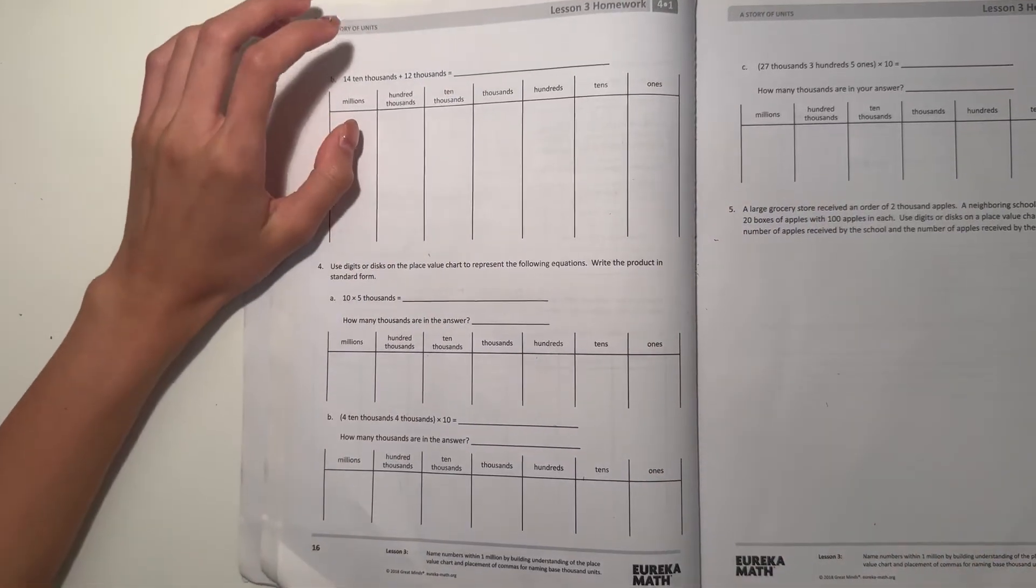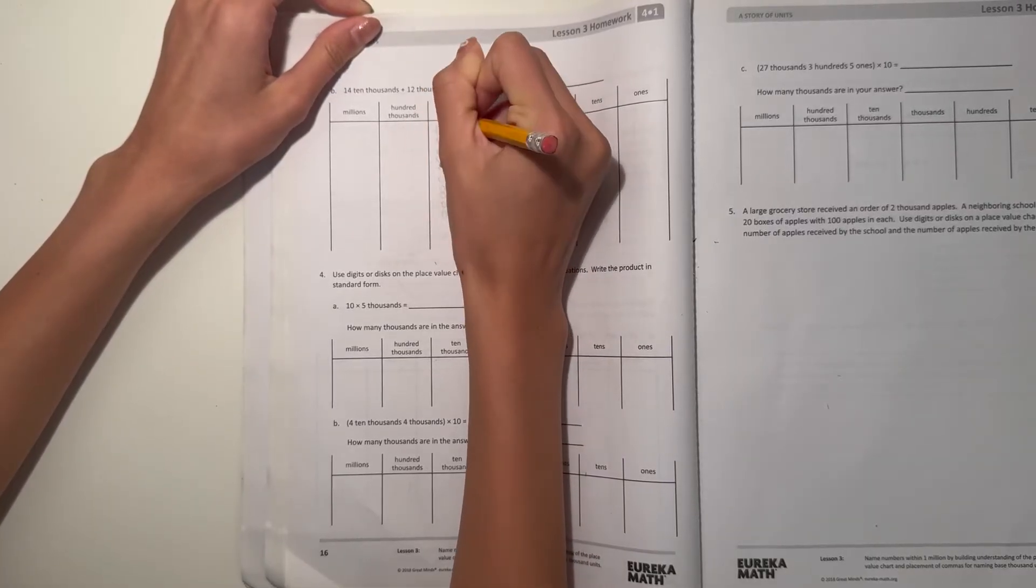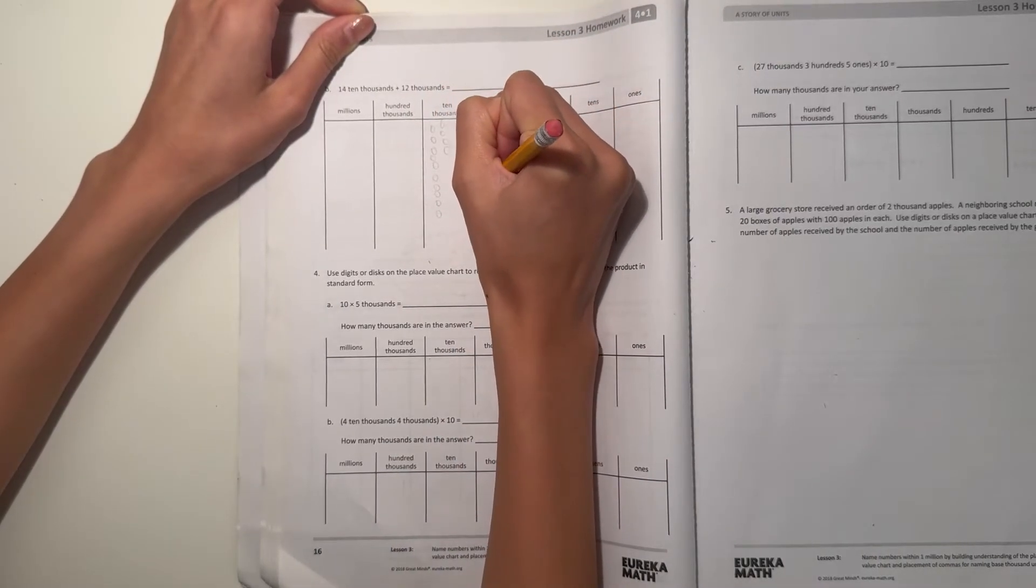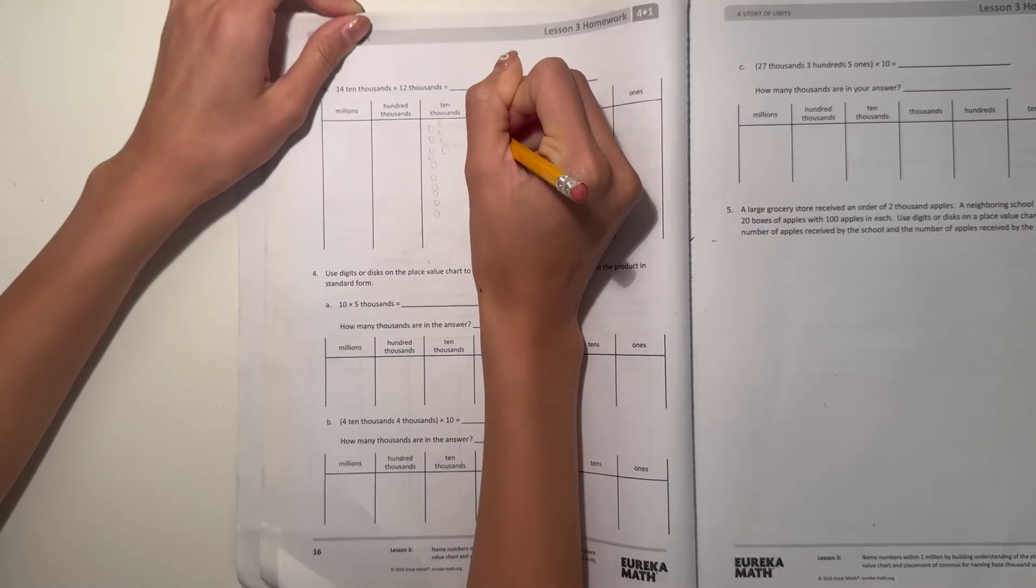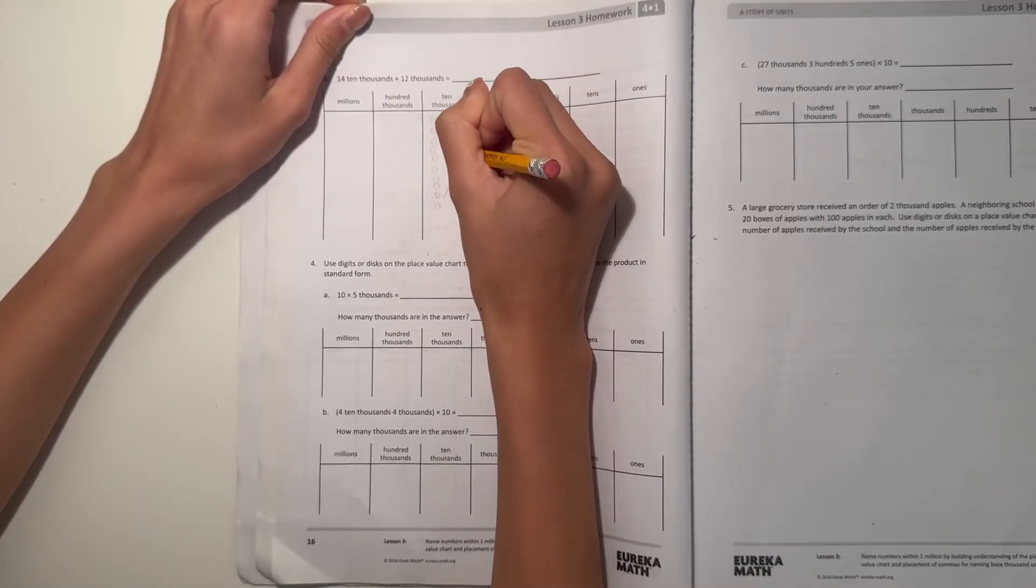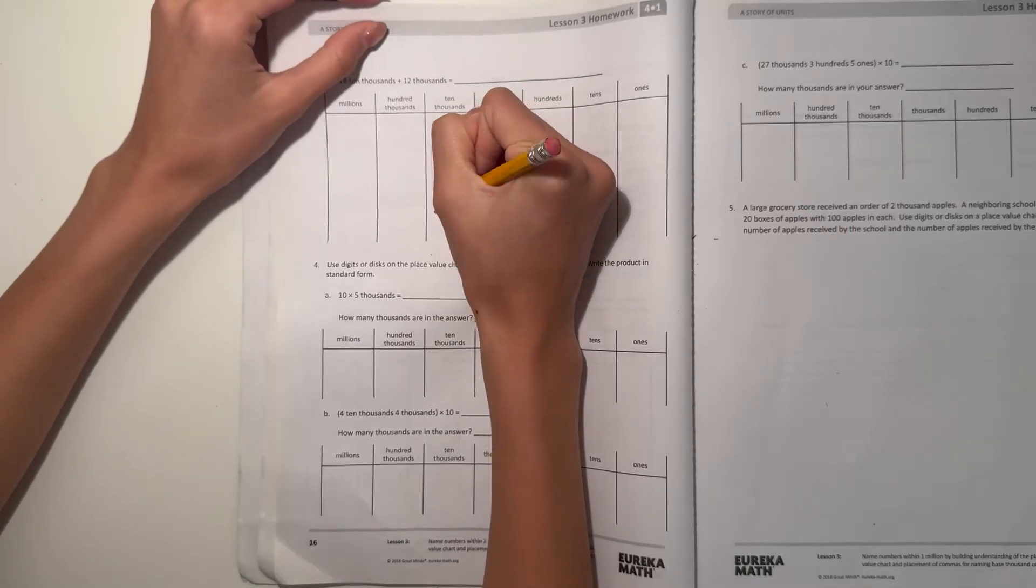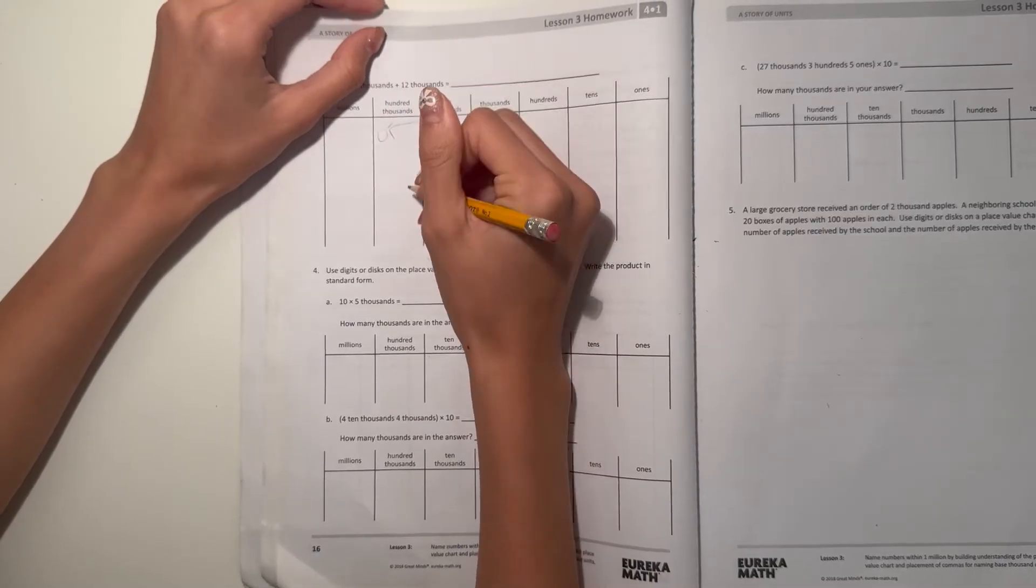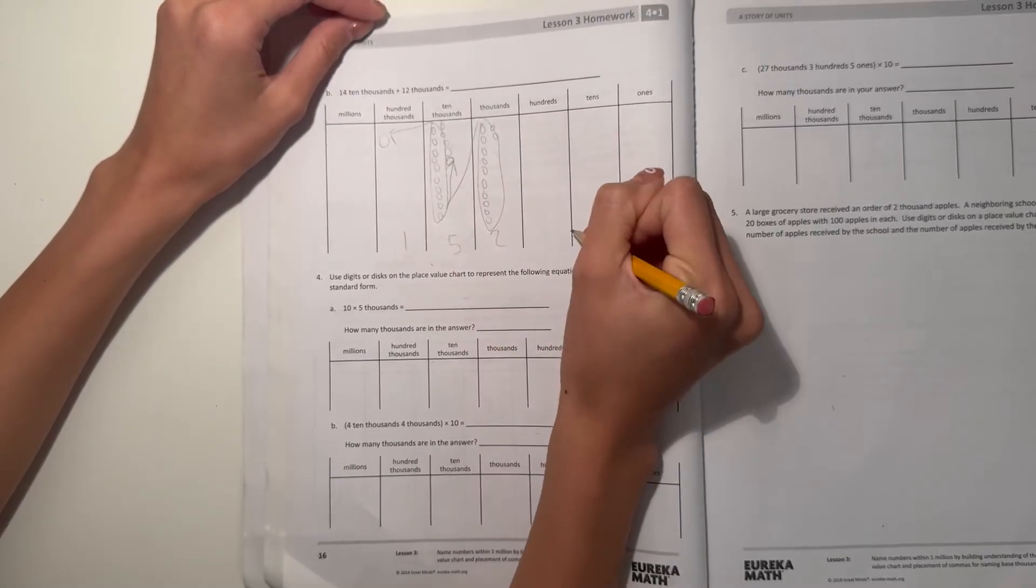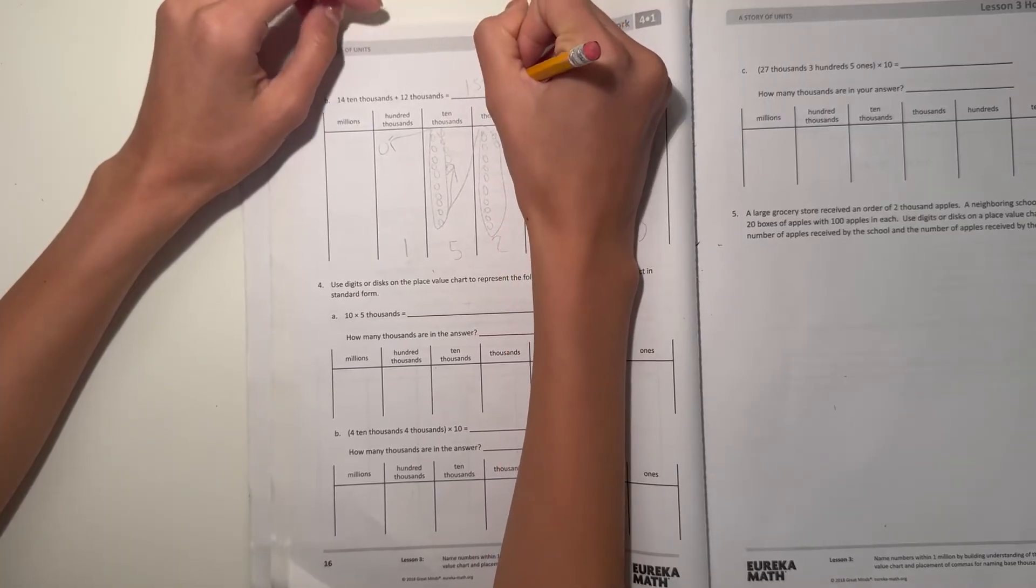All right, next page. B, we have 14 ten thousands. So we have 1, 2, 3, 4, 5. And 12,000. So let's see, our 12,000, so this group of 10 right here can go actually here. Join another here. So now this one, 10,000, this group of 10 can join 100,000. So now we have 1, 5, 2, 0, 0, 0. So that's 152,000.